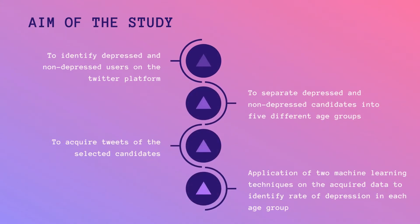The aim of our study is: to identify depressed and non-depressed users on the Twitter platform; to separate selected candidates into five different age groups; to acquire tweets of the selected candidates; and to apply two machine learning algorithms on the data to identify the rate of depression in each age group.